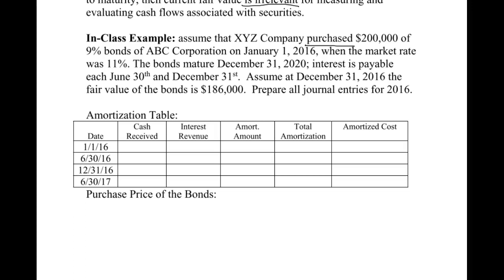In your long-term debt chapter, you're going to be the one issuing these bonds. Depending on which book you're using: the Kiso book has the long-term debt chapter before this chapter, while the Spiceland book has the investment chapter before the bond issuance chapter, so the order will be a little different. We're purchasing $200,000, 9% bonds — 9% is the stated rate. On January 1, 2016, the market rate is 11%. They mature at the end of five years, and interest is payable every six months, semi-annually, which is common for bond problems.